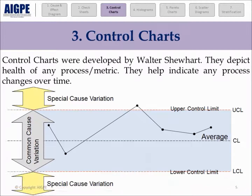Control charts were developed by Walter A. Shewhart in the 1920s. They help us understand whether a process is in statistical control and are used to track the performance of metrics in focus. The upper control limit and lower control limit are plus or minus three standard deviations from the mean. When points fall outside control limits, the process is considered out of statistical control. Concepts of common cause and special cause variation are used in control charts, and different control charts are used for different types of data.